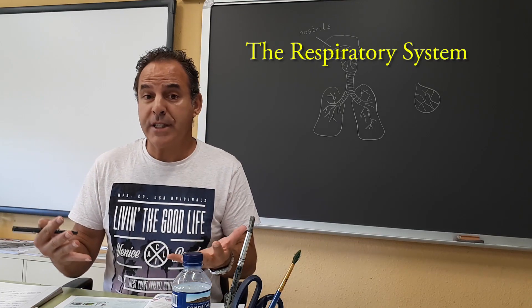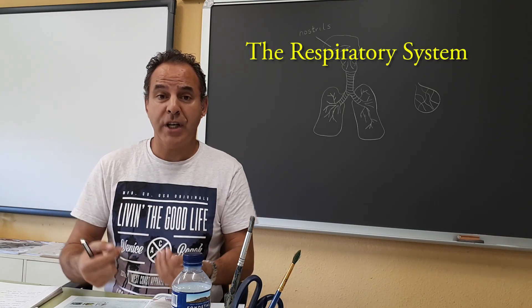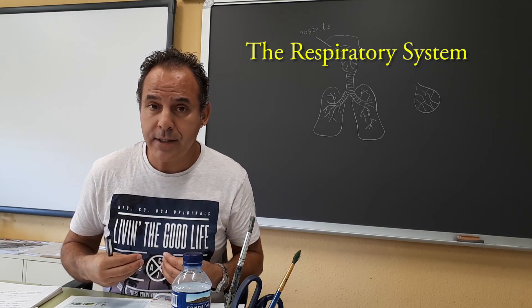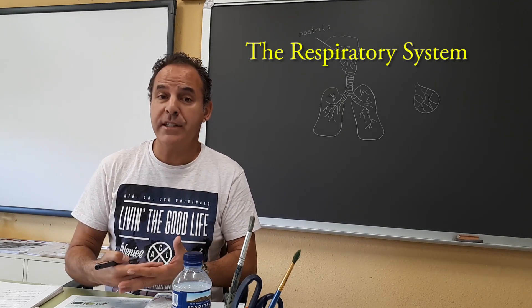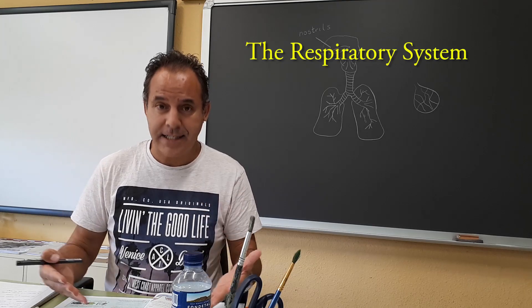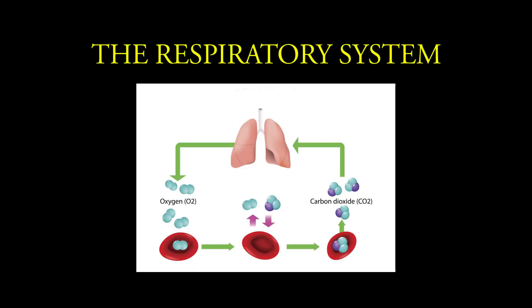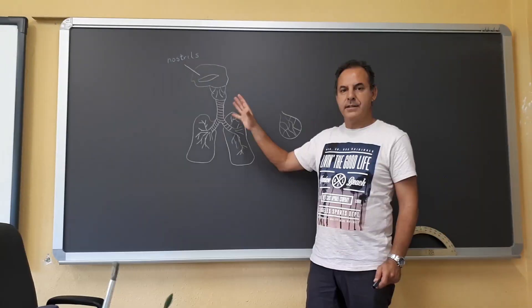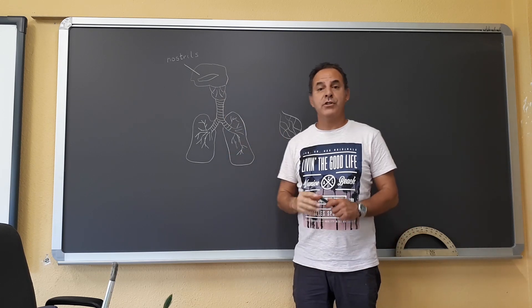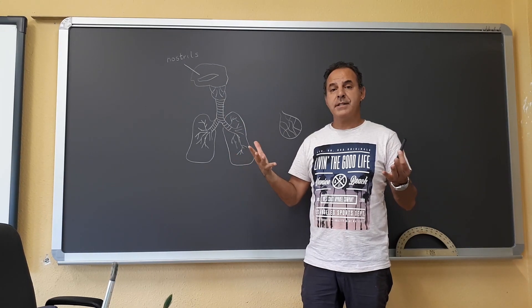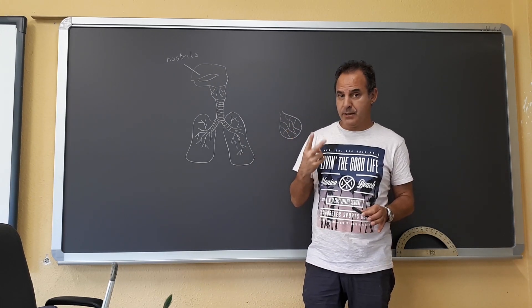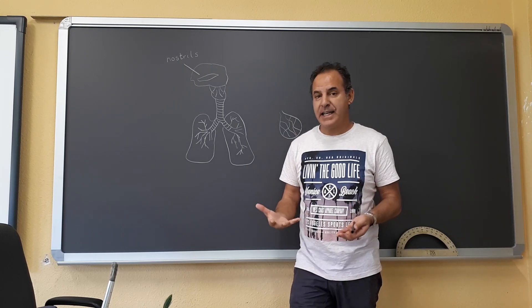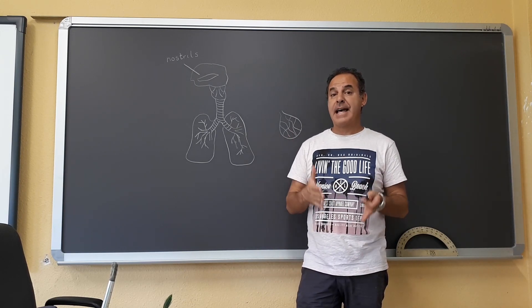We have the respiratory system that helps us to get oxygen into our bodies, and then we get rid of the carbon dioxide through the pulmonary ventilation and through the gas exchange. This is a picture of the respiratory system. What happens in the respiratory system? There are basically two processes: one is the pulmonary ventilation and the second one is the gas exchange.